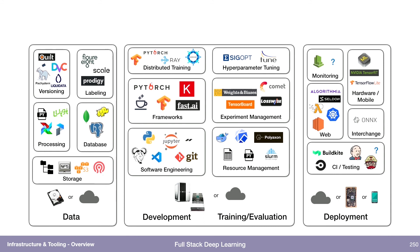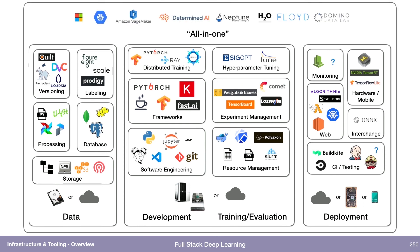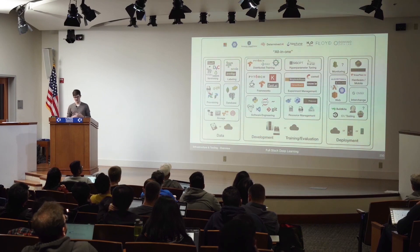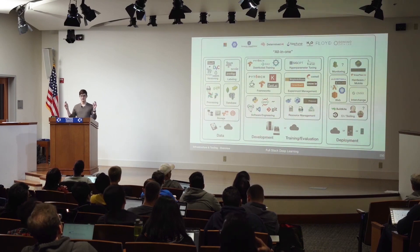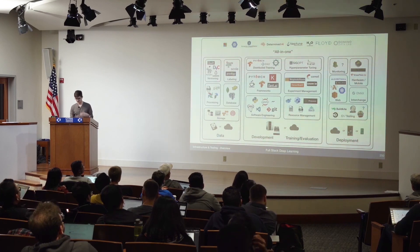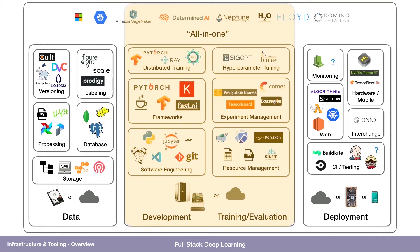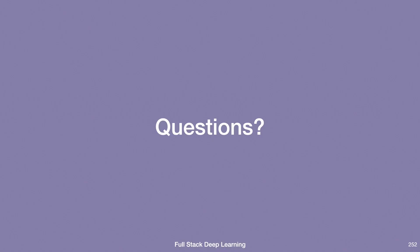If we're deploying on embedded systems or mobile, we may care about interchange formats, network distillation, and mobile-specific frameworks. There's also an increasing number of startups and big companies like Microsoft, Google, and Amazon trying to handle all of it for you — all-in-one machine learning tools, which some of you asked about in the previous module. In this specific module we'll talk about infrastructure for development, training, and evaluation, with upcoming lectures covering the data side and the deployment side.